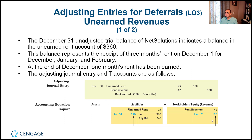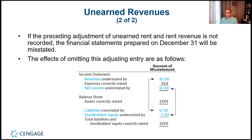On the accounting equation: liabilities decrease by $120 (debiting unearned rent), and revenue — positively impacting stockholders' equity — is credited $120 for rent revenue. If this adjusting entry is omitted, revenue would be understated by $120, net income would be understated, liabilities would be overstated by $120, and stockholders' equity would also be understated. Net income and stockholders' equity move in the same direction.